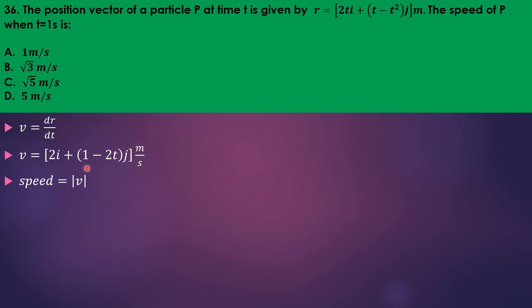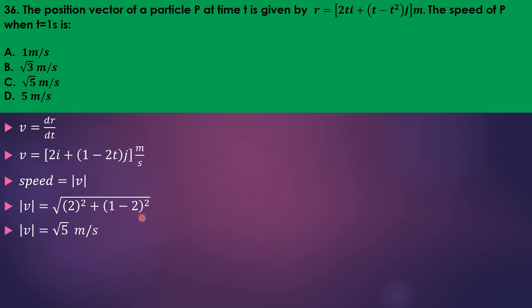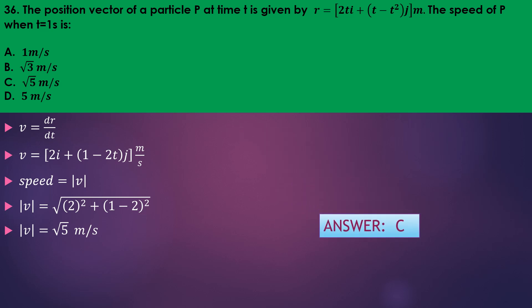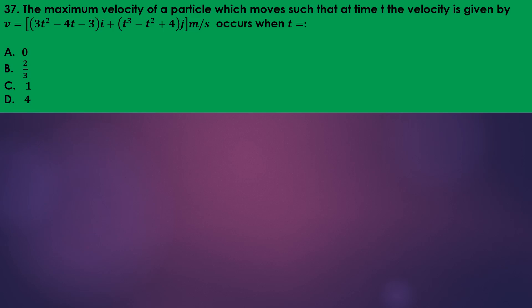Speed is the magnitude of velocity. You take the i and j components squared. The j-component is one minus 2t, and at t equals one second you get one minus two squared. So you actually have root five. Our answer is C.